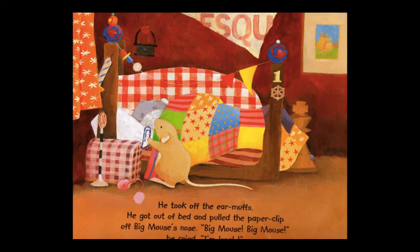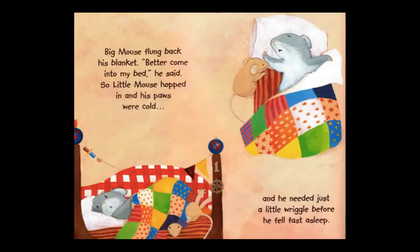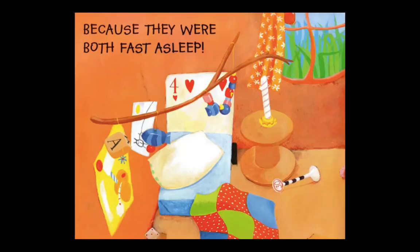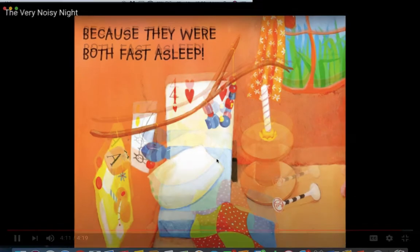It was very, very, very quiet. He couldn't hear the wind huffing, or the branch tapping, or the owl hooting, or Big Mouse snoring. It was so quiet that Little Mouse felt as if he was all alone in the world. He took off the earmuffs, got out of bed, and pulled the paper clip off Big Mouse's nose. 'Big Mouse, Big Mouse,' he cried. 'I'm lonely.' Big Mouse flung back his blanket. 'Let's go into my bed,' he said. So Little Mouse hopped in, and his paws were cold, and he needed just a little wriggle before he fell fast asleep. Big Mouse lay and listened to the wind huffing and puffing, and the branch tapping, and the owl hooting, and Little Mouse snuffling. And very soon, he heard the birds waking up, and neither of them heard the alarm clock, because they were both fast asleep.